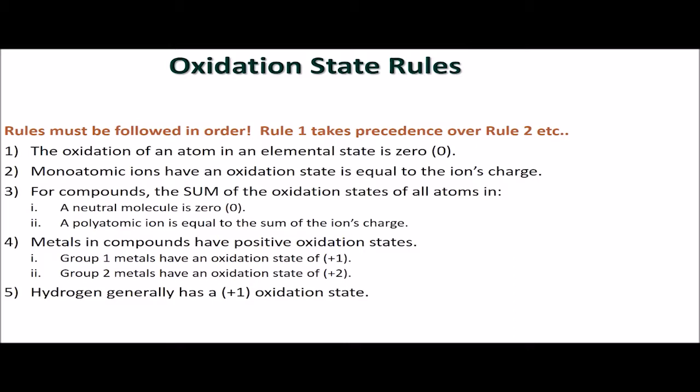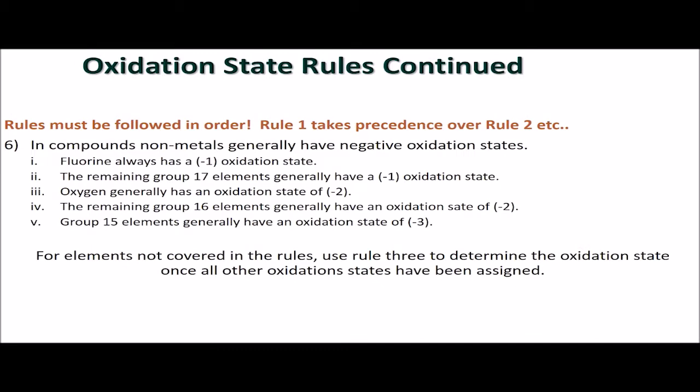When assigning oxidation states to atoms in a redox reaction, the rules must be followed in order. This means rule 1 takes precedence over rule 2 and so on. Review the oxidation state rules and use them to work through the redox examples in this section.